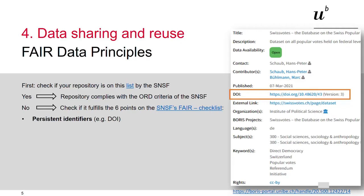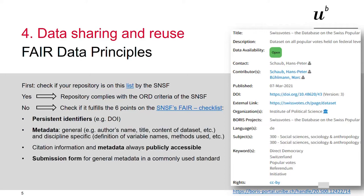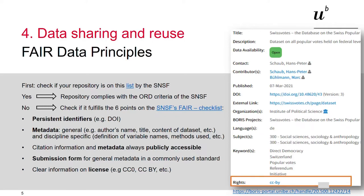Does the repository assign a persistent identifier to your dataset? A persistent identifier is a long-lasting reference to a digital resource. The best-known form, which you may already know from your journal article, is the DOI, but there are also others. Furthermore, the repository must allow the publication of general metadata as well as subject-specific metadata. The metadata must always be publicly accessible, even if the data cannot be shared publicly. The general metadata must be entered using a standardized form — the repository must provide a submission form with which you can enter the most important metadata, and this must always be publicly available. Also, a license must be clearly visible. And finally, a long-term preservation plan must be in place.